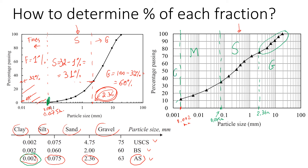Now we calculate the amount of each fraction. Starting from 100 percent, we see that about 75 percent is finer than the sieve size of 2.36 millimeters. Gravel is the portion that remains in the sieve, so if 75 percent passes through, gravel is 25 percent.